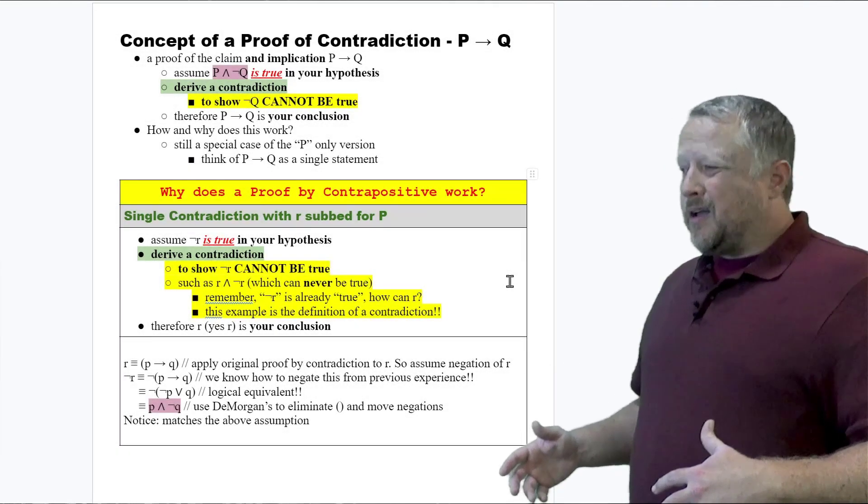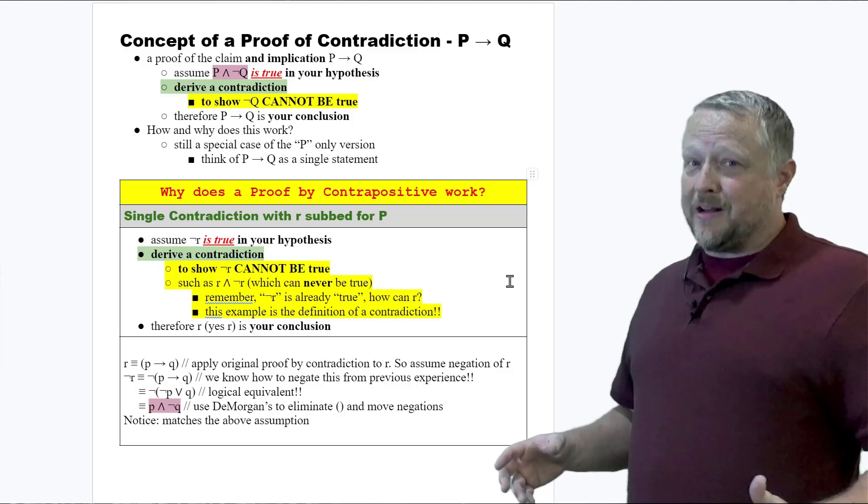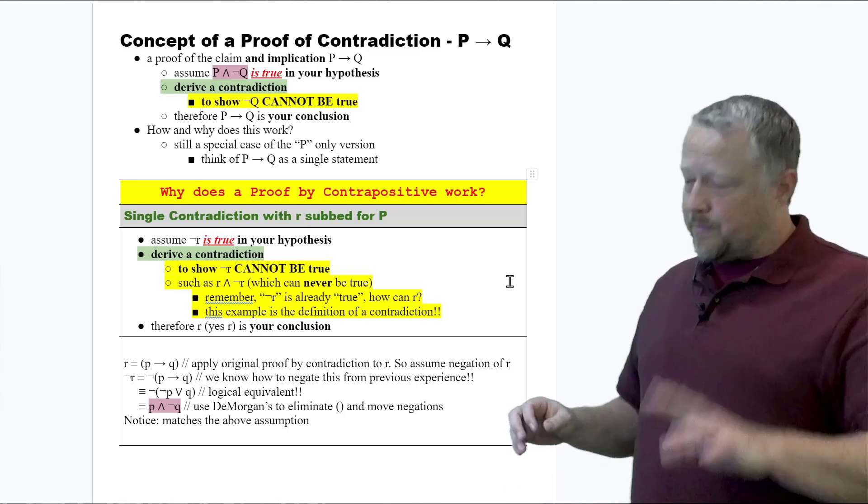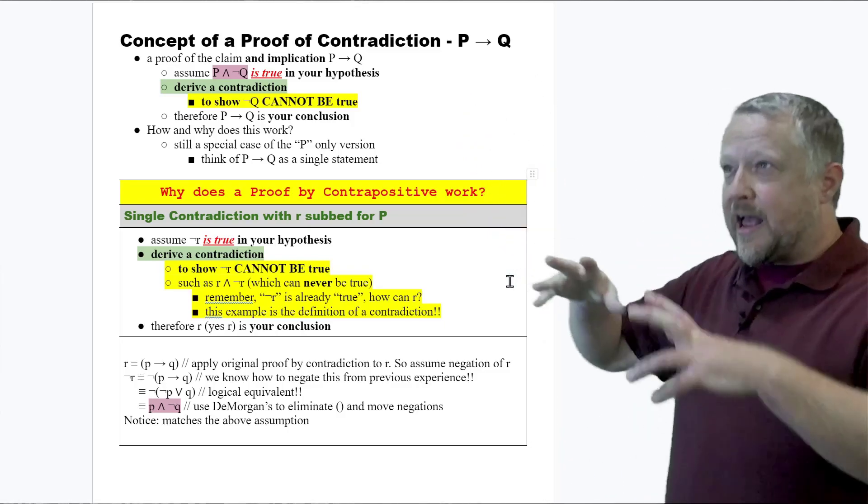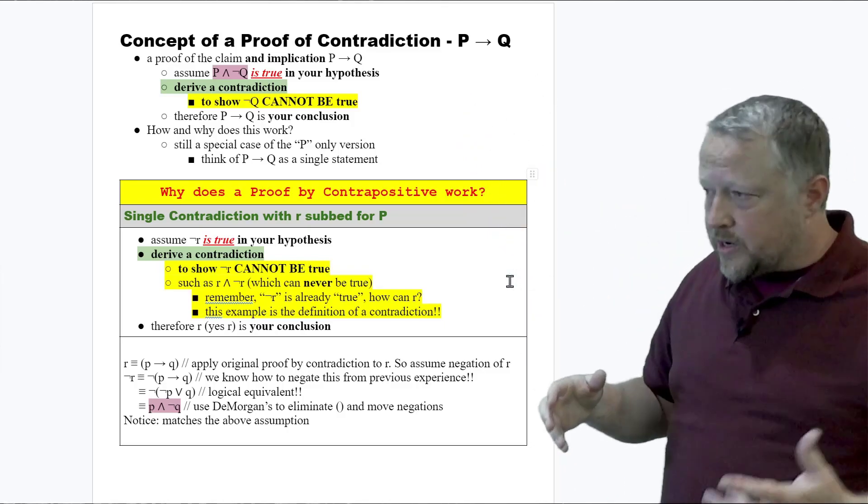Here's part two. Now, to be honest with you, there's actually going to be a lot of things that are exactly the same, and I'll go over why here in a moment, but this is using P implies Q, so we have a more verbose statement that we're given here.